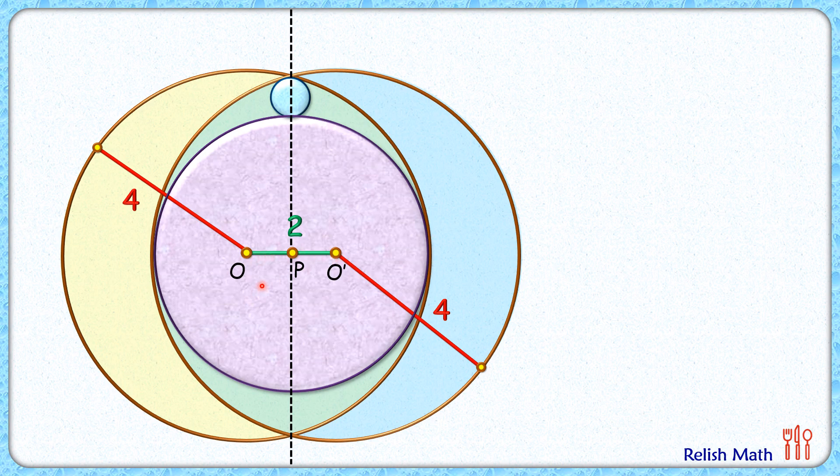Let's extend this OO dash line to meet here at point A. Now OA, if you observe carefully, is the radius of this yellow circle, and thus OA length is 4 cm. And O dash A, that length will be 4 minus 2, or 2 cm.